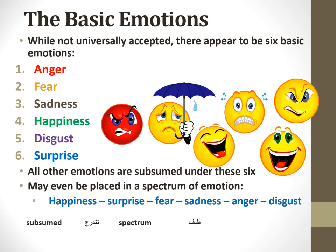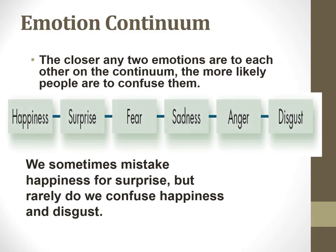Can we mistake two emotions for each other? Yes. The closer any two emotions are to each other on the continuum, the more likely people are to confuse them. For example, I can confuse happiness and surprise, or anger and disgust. But we would not confuse happiness and disgust, as they are far apart.